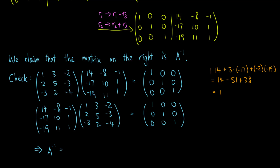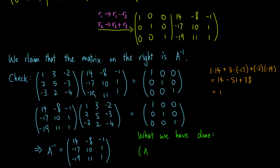The inverse of A is the matrix [14, -8, -1; -17, 10, 1; -19, 11, 1]. What we have done here is carry the augmented matrix [A | I] to [I | A⁻¹] by elementary row operations.